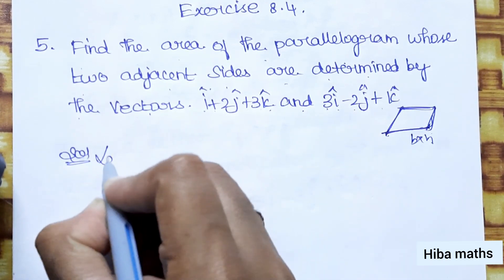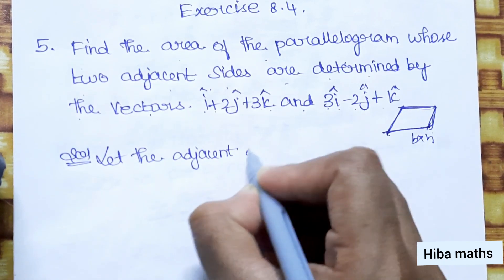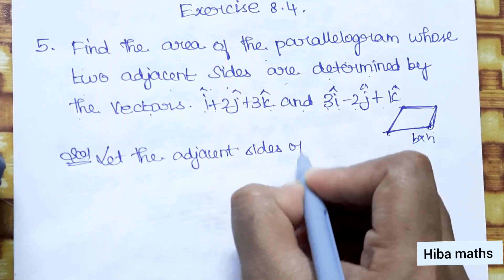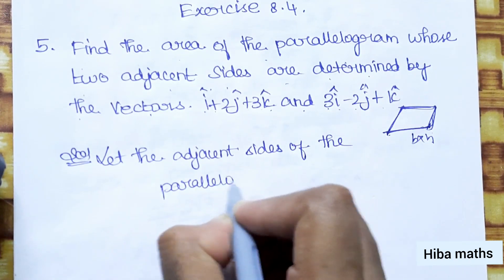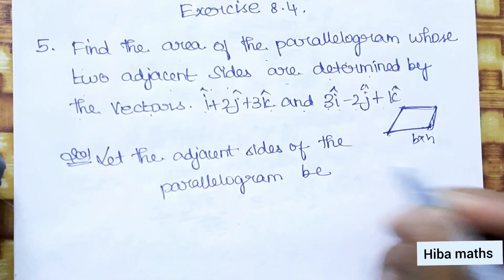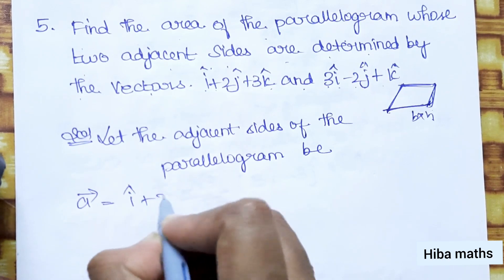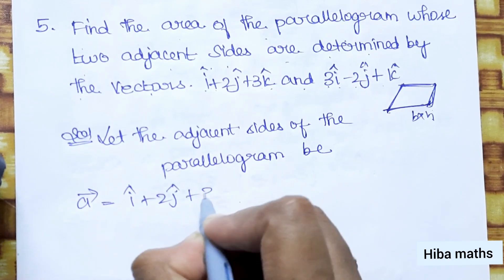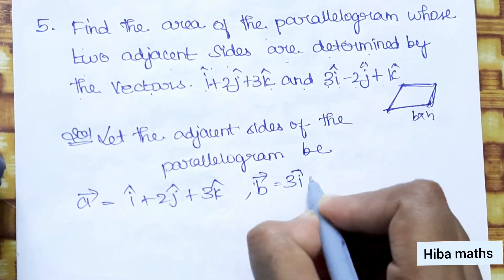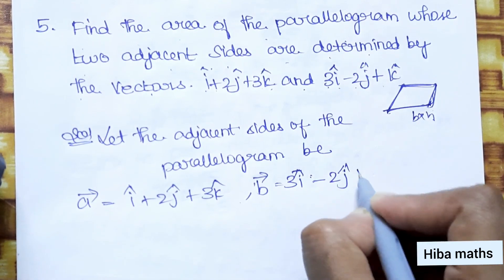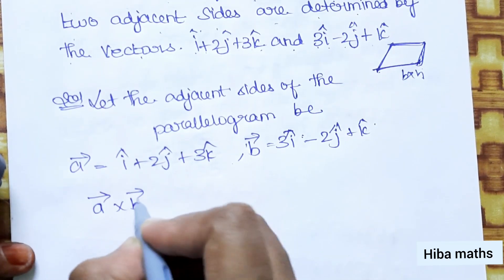Solution: Let the adjacent sides of the parallelogram be vector a = i + 2j + 3k and vector b = 3i − 2j + k. Now we compute a vector cross b vector.